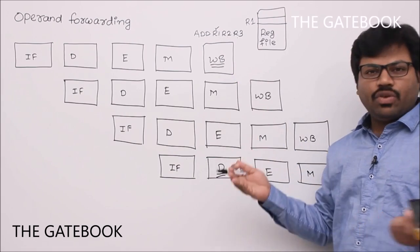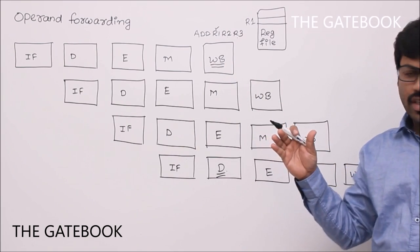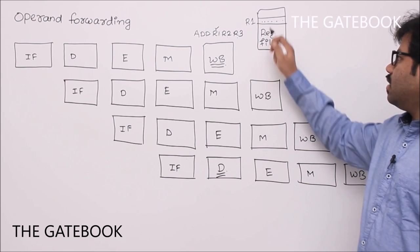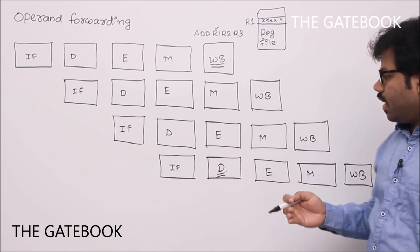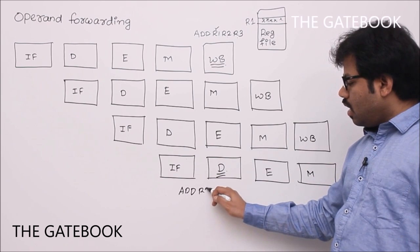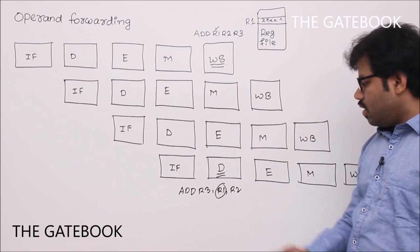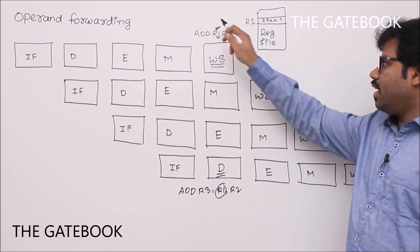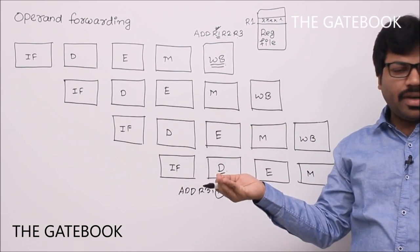Though these are not exactly independent circuits, the write-back stage is writing something into the register file while the decode stage is reading registers. For example, with instruction 'add R3, R1, R2', in the decode stage you will be reading R1 which is currently being written. If both things happen at the same time, unexpected results occur.